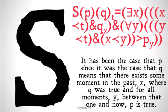If you want this logically in terms of our precedence relation, we define it as: 'it has been the case that P since it was the case that Q' means there exists some moment in the past X where Q was true, and for all moments Y between that one and now, P is true. That should be sufficient for you to create your own definition even if mine doesn't make complete sense.